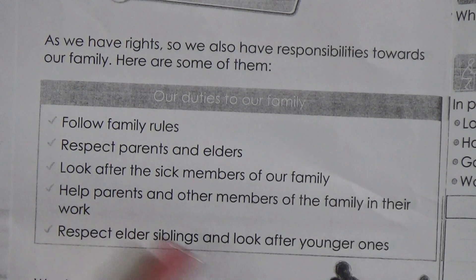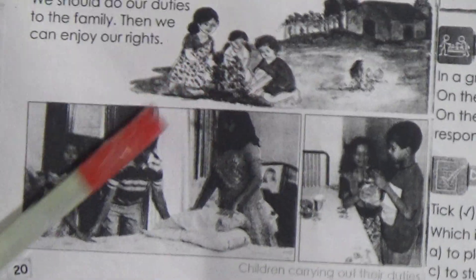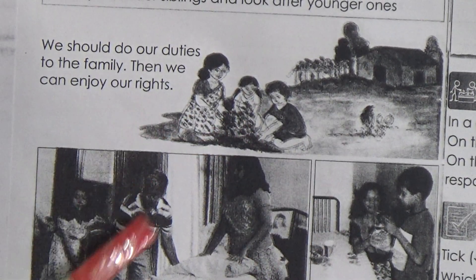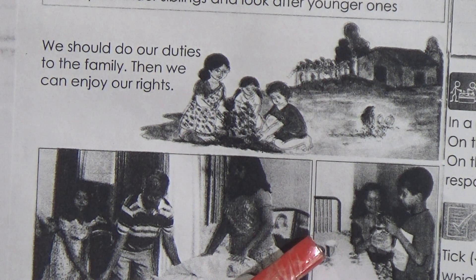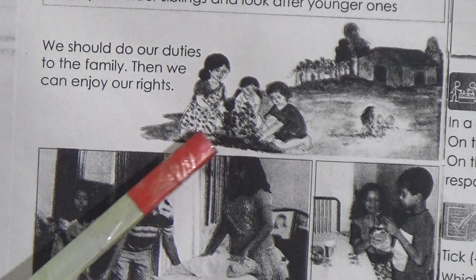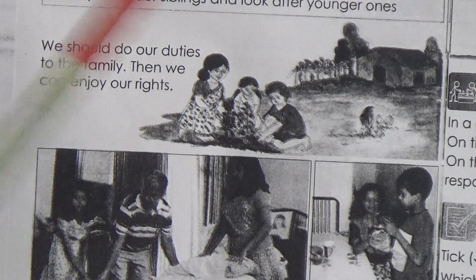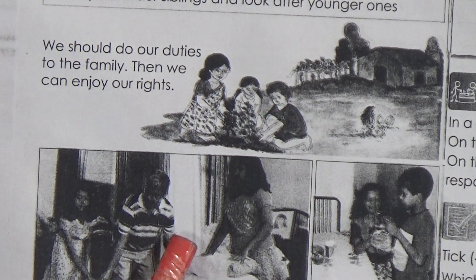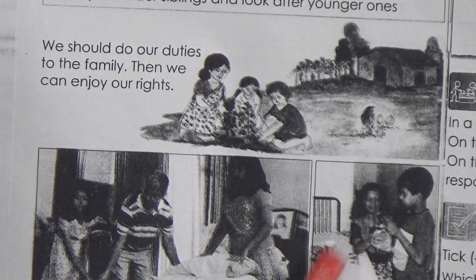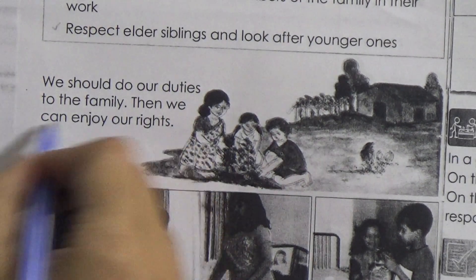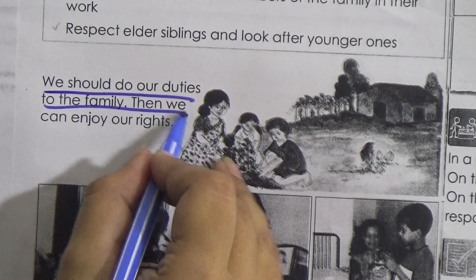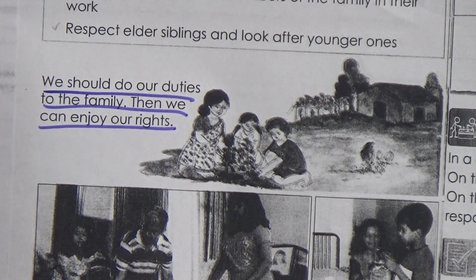Look at the picture — the children are helping their family members. They are planting trees, helping their mother or family members. In another picture they are doing household work and helping their father. All of you should do some work in your family to help your parents and other family members. We should do our duties to the family first, and then we can enjoy our rights.